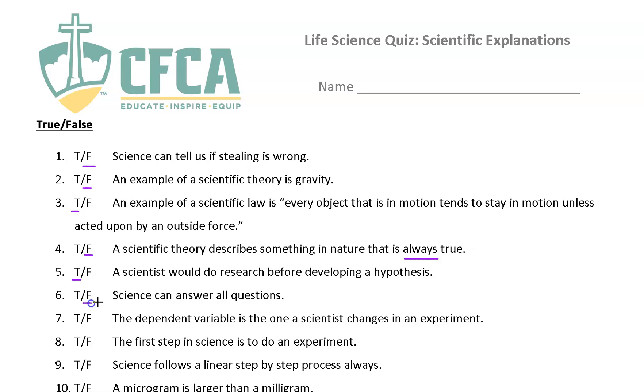Science can answer all questions. Of course, the key word there usually in true and false is all. That's false. The dependent variable is the one scientists change in an experiment. That's false. The independent variable, I change. The independent variable is the one the scientist changes.